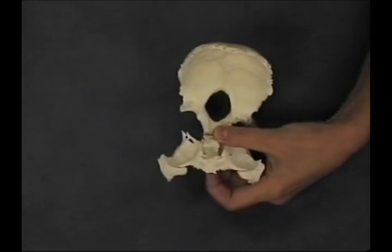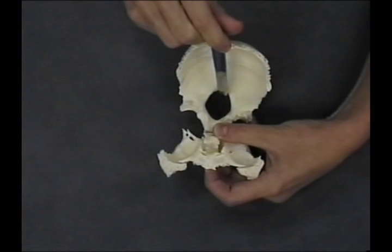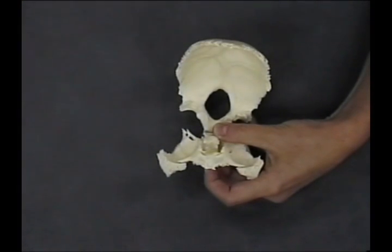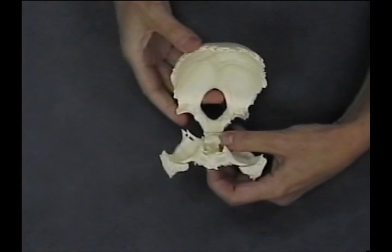So here we go. One axis through the body of the sphenoid, one through the occiput at the level of the foramen magnum. Here I'm going to show you what a right lateral strain would look like.